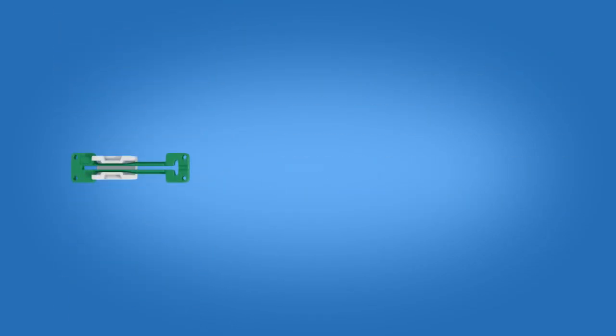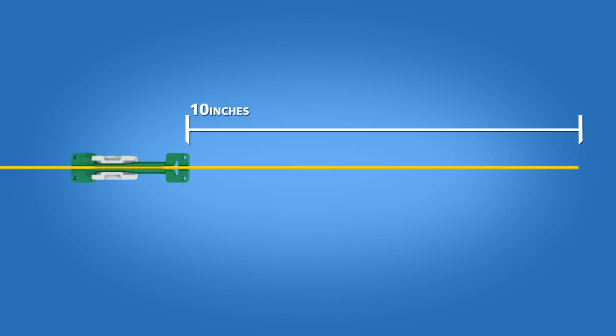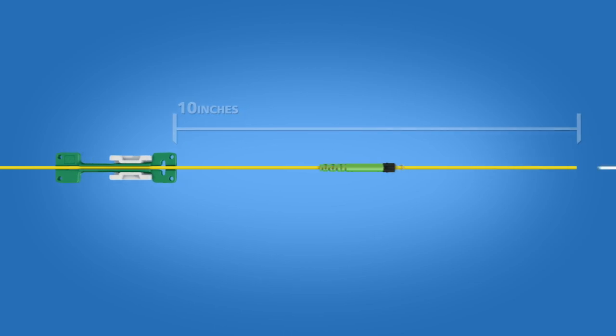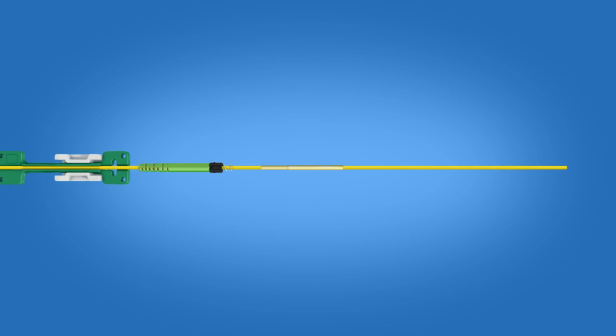Begin by placing the cable into the three millimeter cable clamp approximately 10 inches from the end of the cable and engage the clamp. Slide the boot unit and the protective sleeve onto the cable.